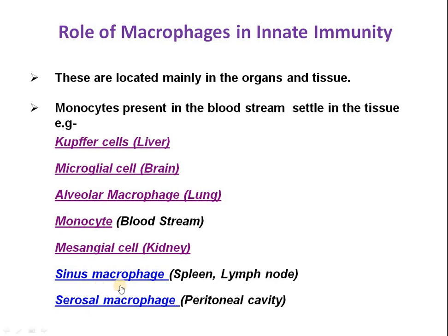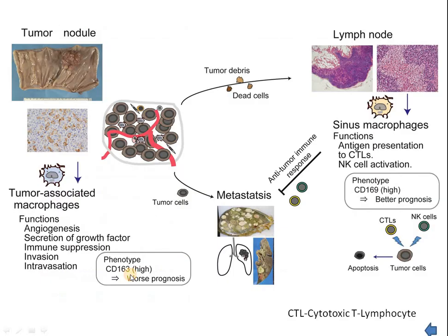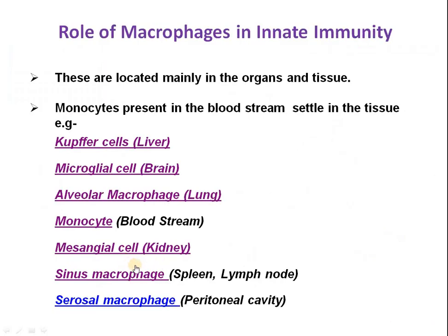Within the spleen and lymph nodes there is another type of macrophagic cell known as sinus macrophages. They are present in the sinuses of the spleen and lymph nodes, and they are responsible for antigen presentation to cytotoxic lymphocytes and for activation of natural killer cells. By this process, sinus macrophages destroy pathogenic substances entering the spleen or lymph nodes.